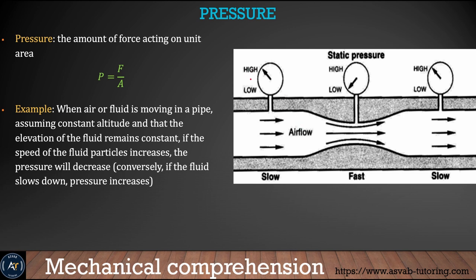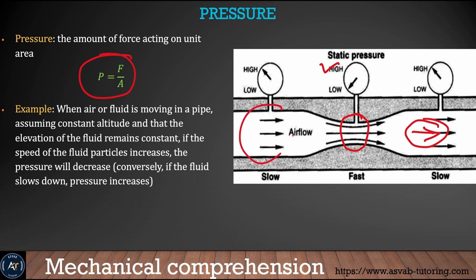Pressure is a very important concept — the Bernoulli equation defines pressure as force per unit area. When air flows through a pipe where the diameter is smaller, the air velocity is high at that point. High velocity means low pressure; low velocity means high pressure. This concept is everywhere in aviation — the top of an airplane wing has higher air velocity, meaning lower pressure, while the bottom has lower velocity and higher pressure. That high pressure on the bottom creates the lift that allows the airplane to fly.